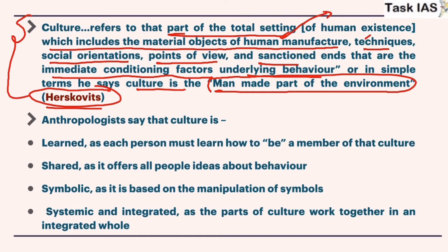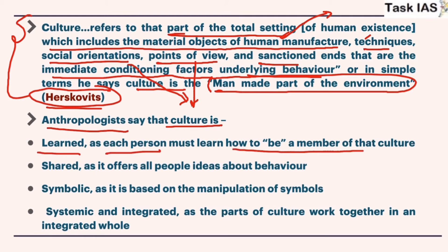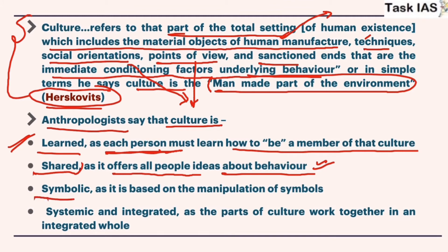Anthropologists say that culture is learned — each person must learn how to be a member of that culture, as traits are transferred by members of older generations or even the same generation. Culture is shared as it offers all people ideas about behavior, and since culture is social, any individual left out cannot be said to have culture. Culture is also symbolic, based on the manipulation of symbols.